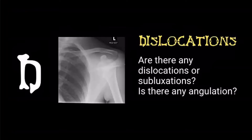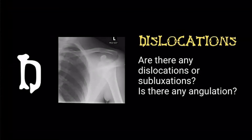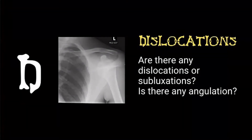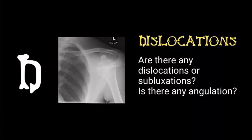D — dislocations. Always thinking about them: thinking about shoulders, thinking about all the joints that you can dislocate. Are there any dislocations? Are there any subluxations? Is there any angulation? Does the shape of the bone look wrong — is it bent instead of being straight? Is it in the right place? And if you think it's dislocated, have you actually got the right views, such as a Y-view on a shoulder x-ray, to confirm?